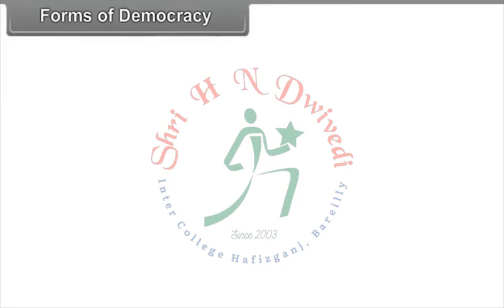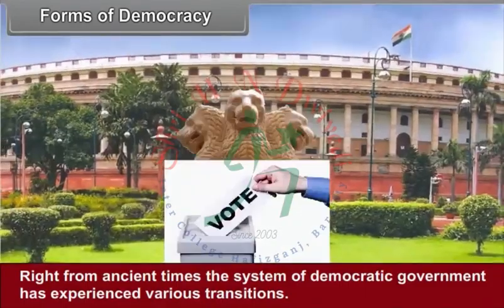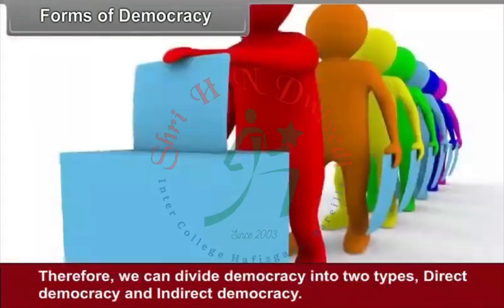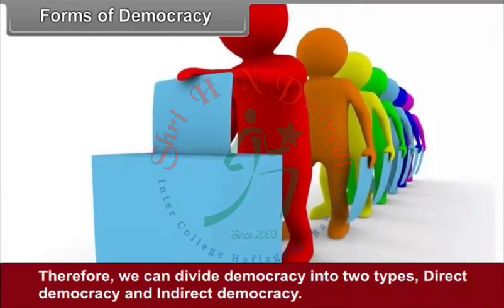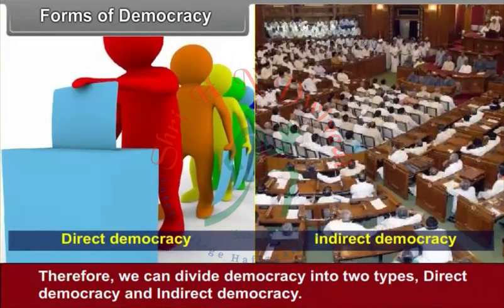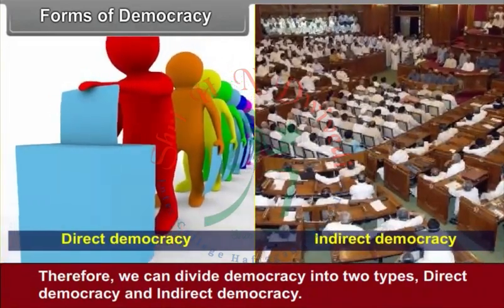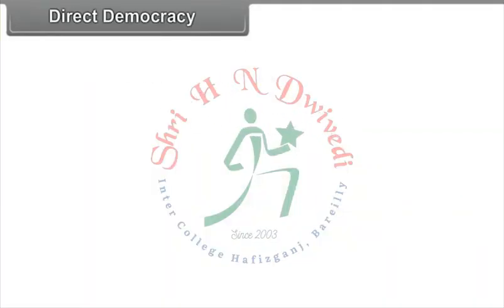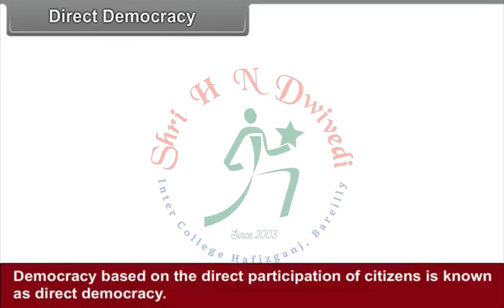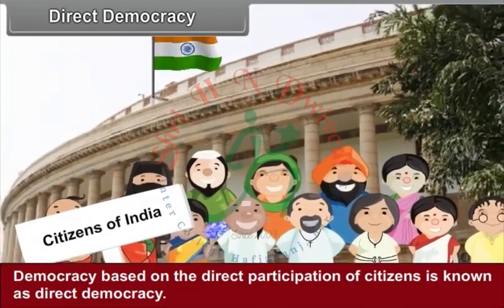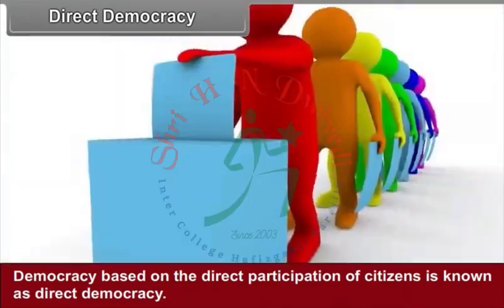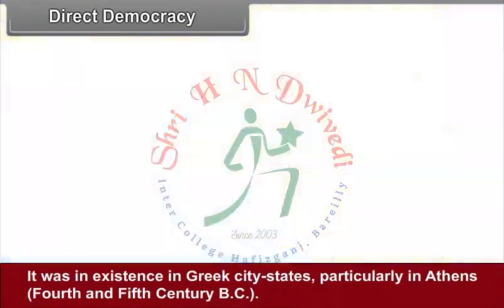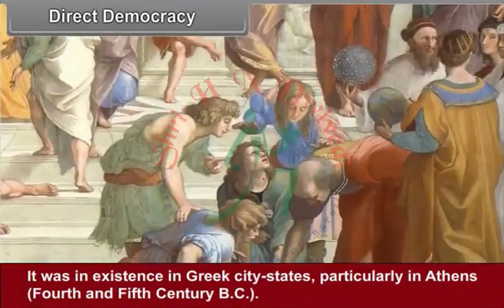Right from ancient times, the system of democratic government has experienced various transitions. Therefore, we can divide democracy into two types: direct democracy and indirect democracy. Direct democracy is democracy based on the direct participation of citizens. It was in existence in Greek city-states, particularly in Athens, in the 4th and 5th century BC.